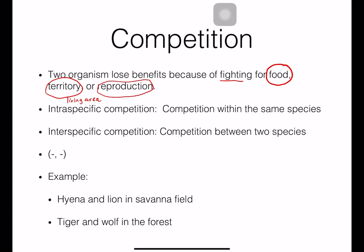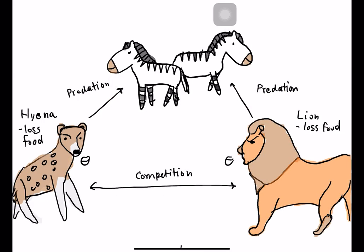The symbol for competition is minus and minus. An example is the hyena and lion in the savannah, and the tiger in the forest. The zebra is the food source for both the hyena and the lion. The lion and hyena fight together to get food, so they get competition and both of them lose benefits.